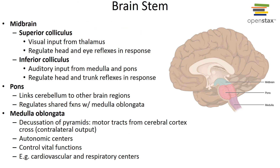The brain stem includes the midbrain, pons, and medulla oblongata. Only portions of the brain stem are visible underneath the cerebrum. Though this region is small, it plays an extremely important role as the nerve connections of the motor and sensory systems from the main part of the brain to the rest of the body.